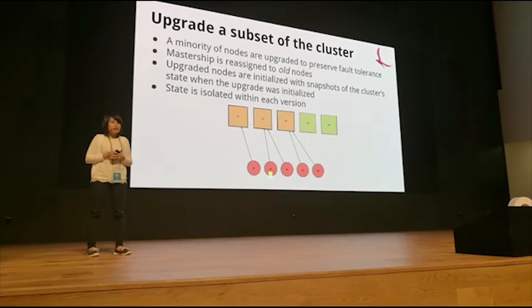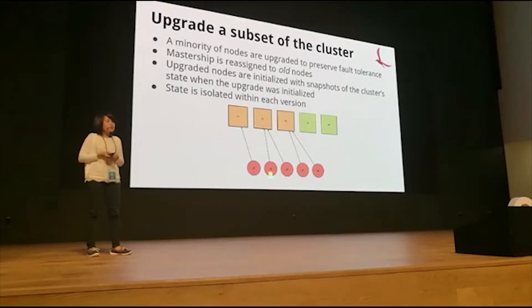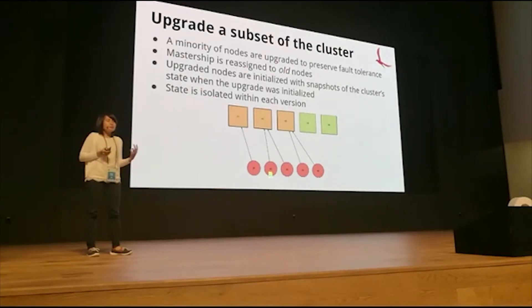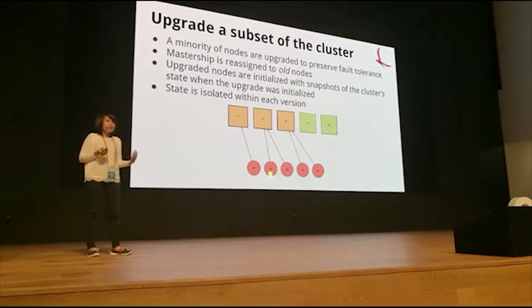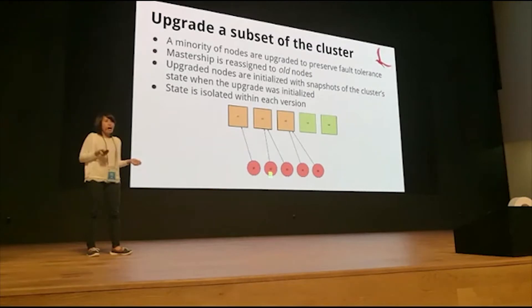As you move to the second stage, you start by upgrading a minority of the nodes in the cluster. This allows you to preserve consensus because your older cluster members are still there. The mastership is reassigned to the old nodes so they're still able to function. You then upgrade your minority of nodes, and the upgraded nodes are initialized with a snapshot of the state of the old nodes. This way, the state is isolated between the old version and the new version.